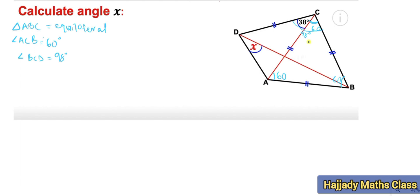From here we can see that the bigger triangle BCD is also an isosceles triangle, indicated by these two equal lines. An isosceles triangle has two equal sides and two equal base angles. So triangle BCD is isosceles. Since angle BCD is 98 degrees, we call the two equal base angles y and y.